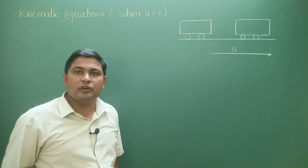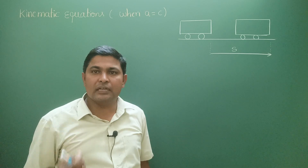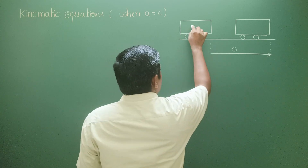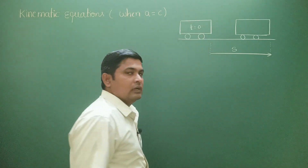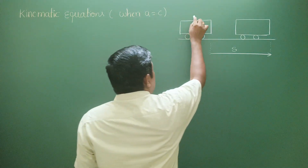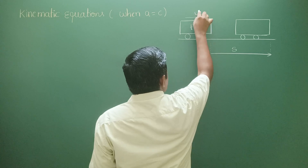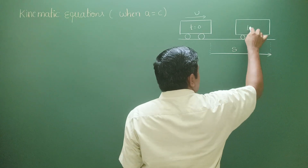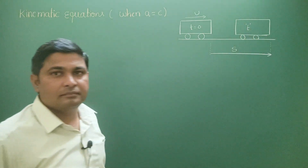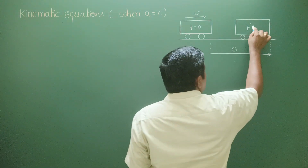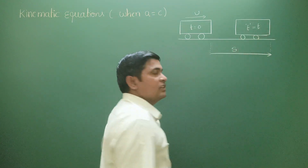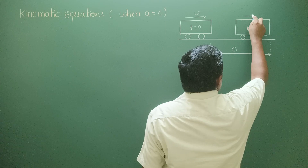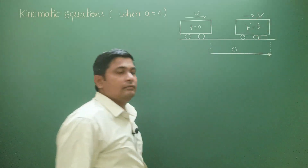What is the meaning of uniform acceleration? We have to understand. Suppose at time t equals 0, the body has some motion with velocity u. And after some time — t seconds — t is not 0, t is some value. At that time t seconds, what is its velocity? It is going to be taken as v.